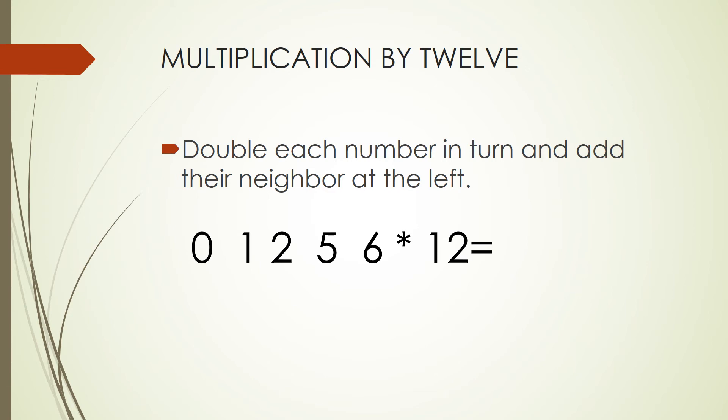So we need to double that number. For example, 6 doubled is 12. And we have no neighbor at the left. So we are just going to write the number 2 from the 12 and carry that 1. We write number 2.